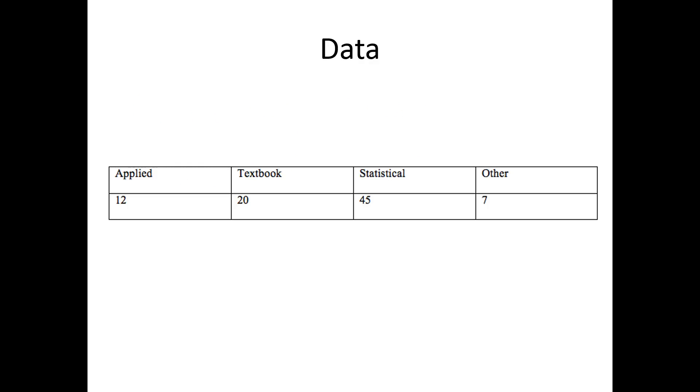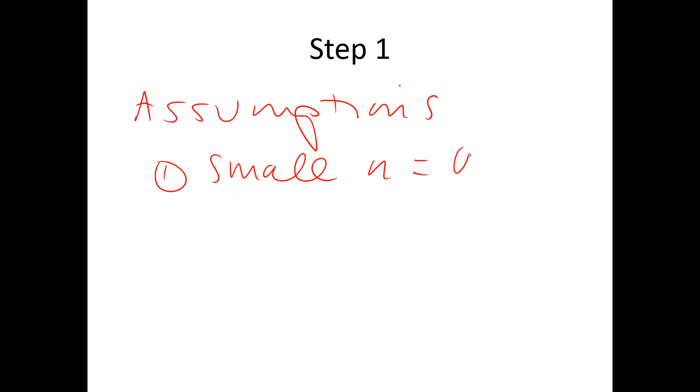So let's start with step one. That is our assumptions. The first one is that there aren't too many small Ns. So at least 50% of the categories have more than five people. If we look at our data, everything has more than five people, so it's okay. The second one is that there are no zeros, and that's also okay.